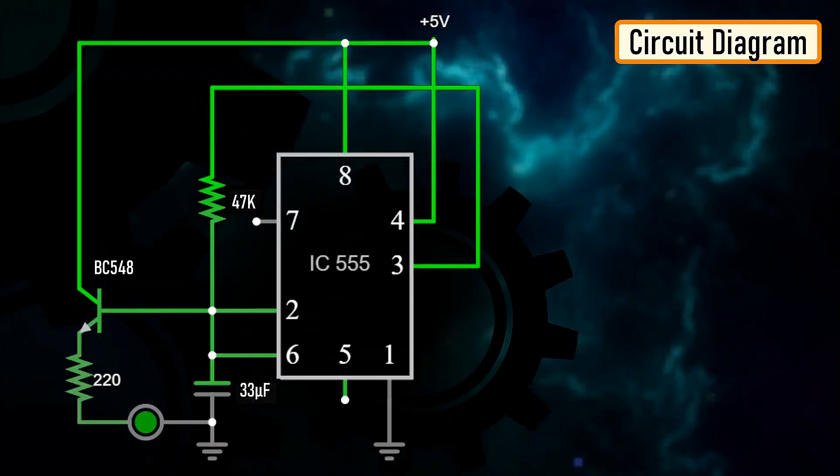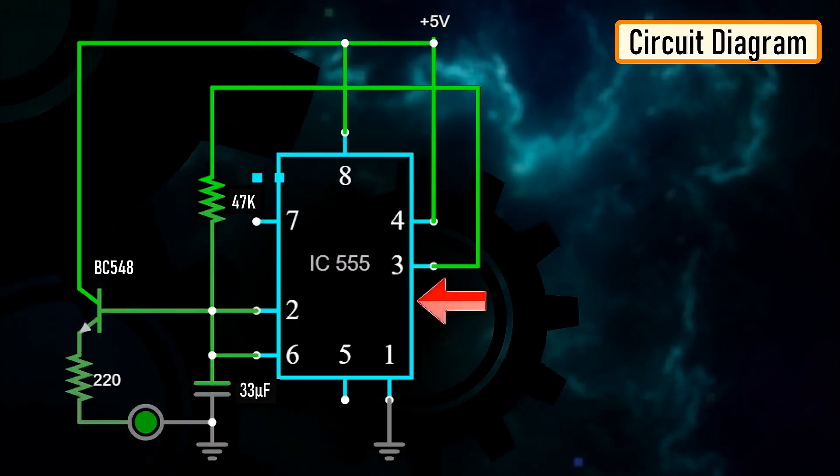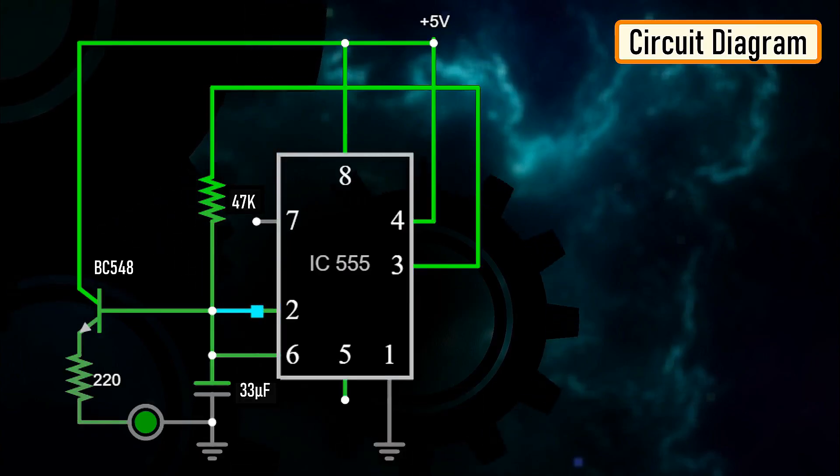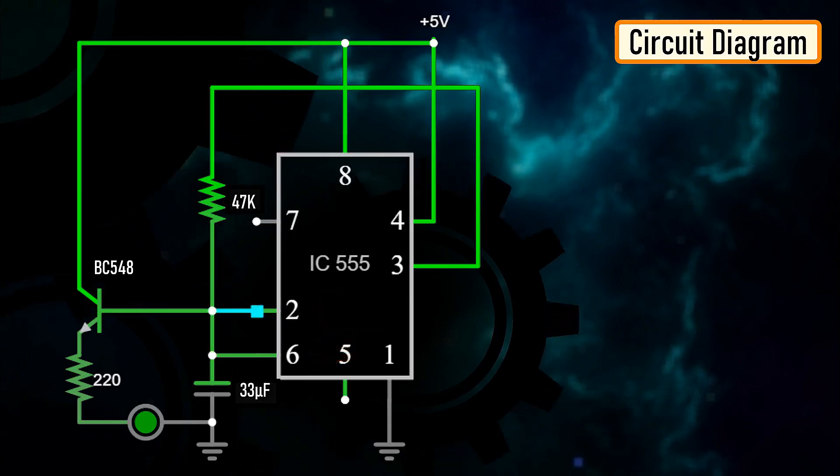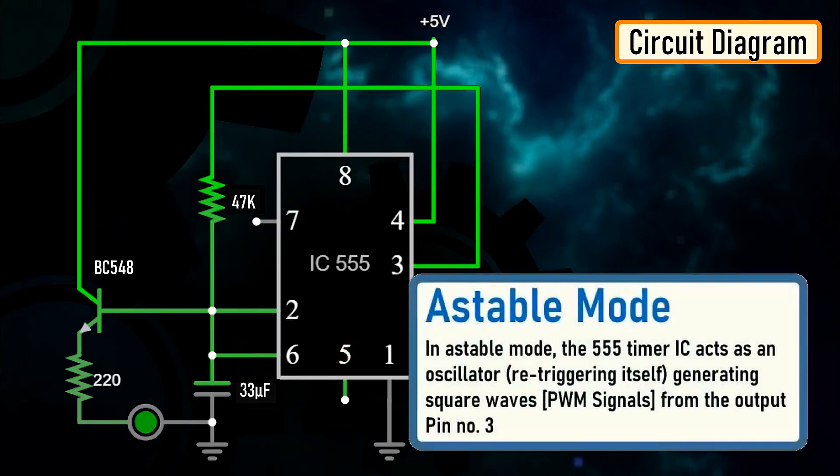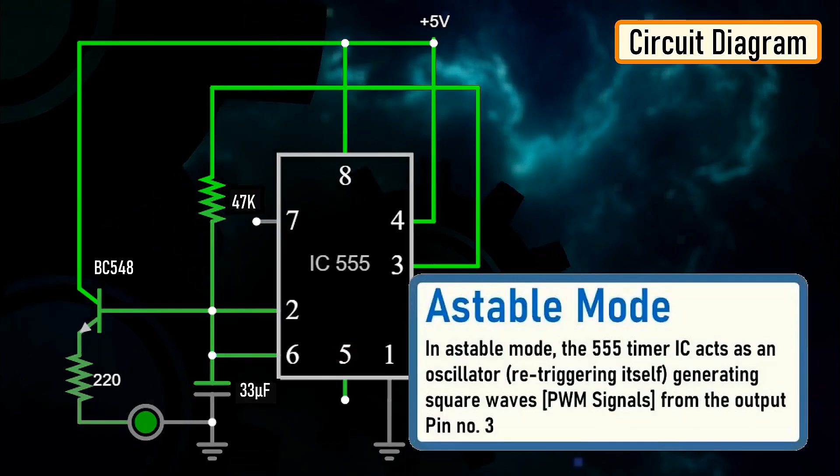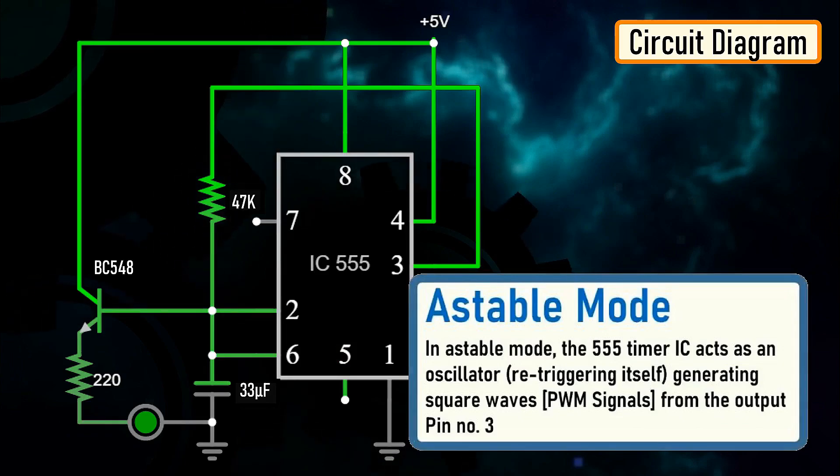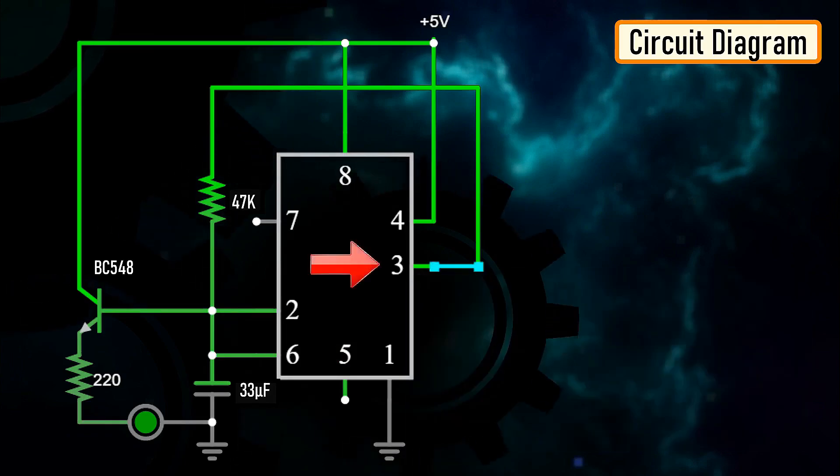The heart of this circuit is the 555 timer IC. Pin number 1 of the IC is connected to ground. By connecting pin number 2 and 6 of the 555 timer IC, we put the IC in astable mode. In astable mode, the 555 timer IC acts as an oscillator re-triggering itself, generating square waves from output pin, pin number 3.